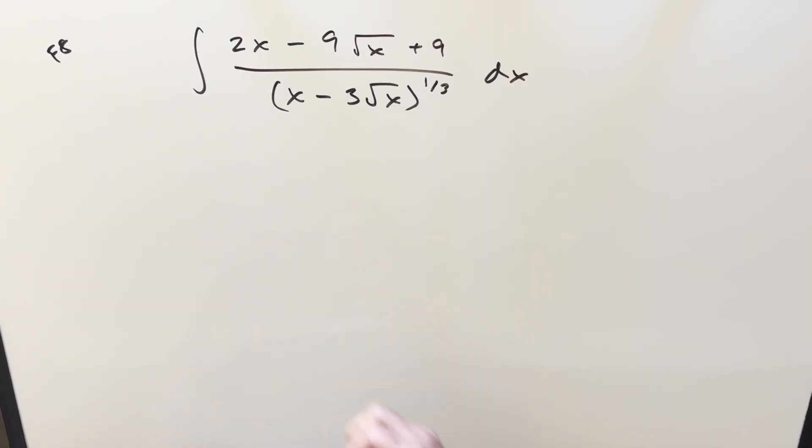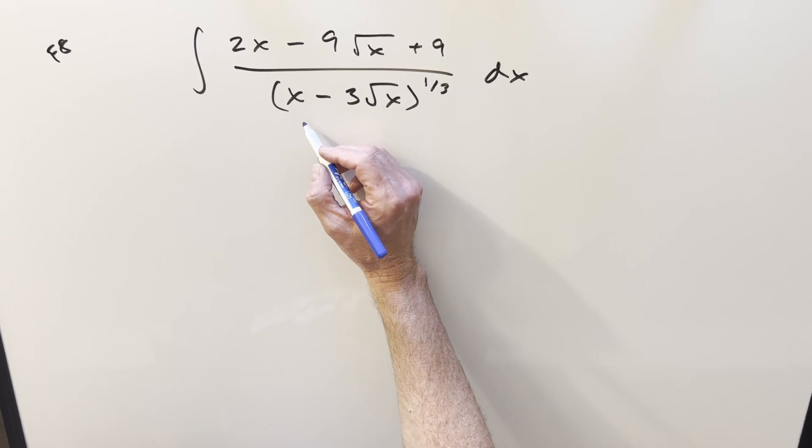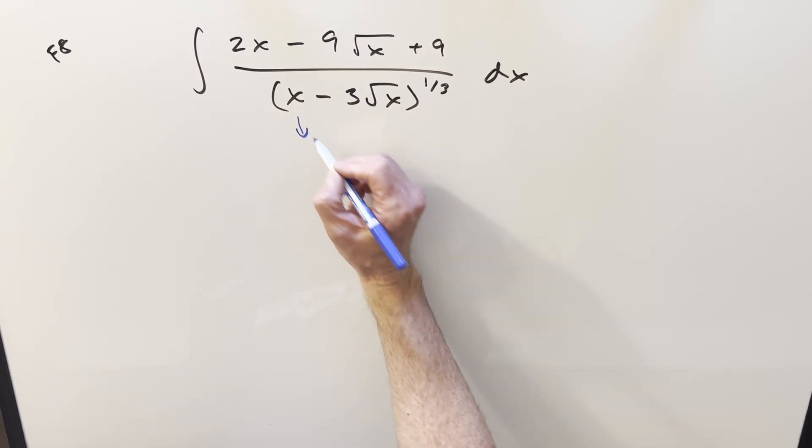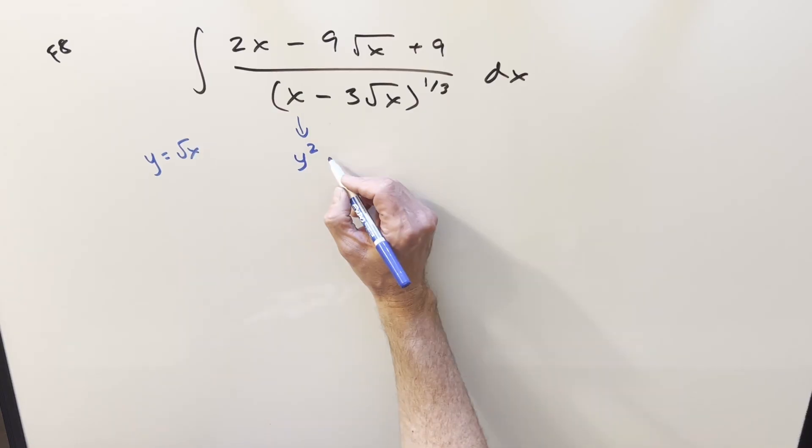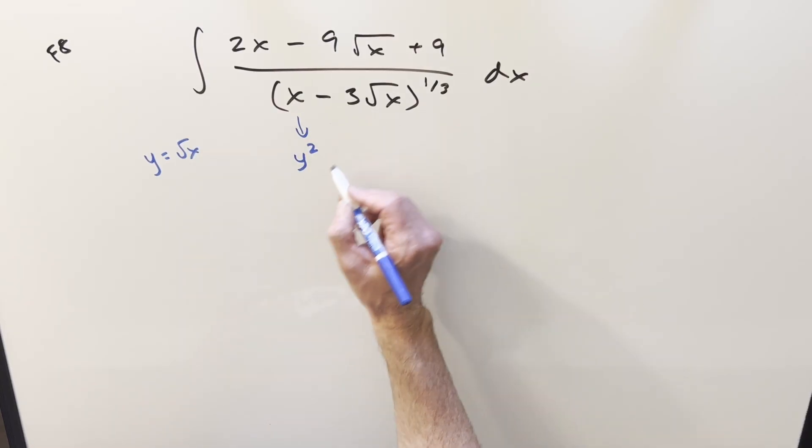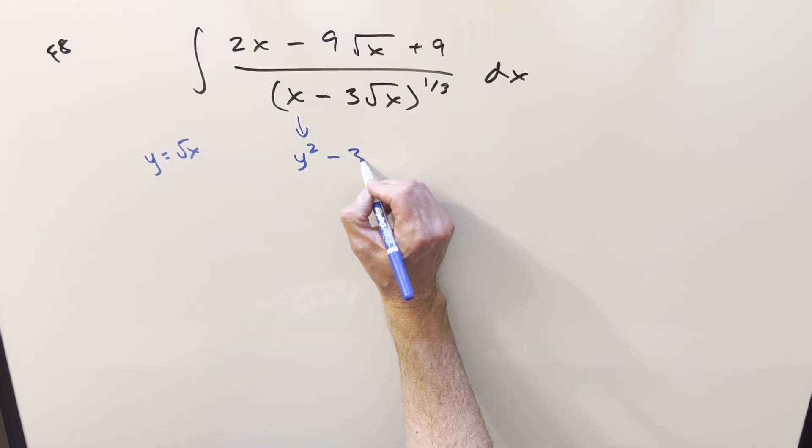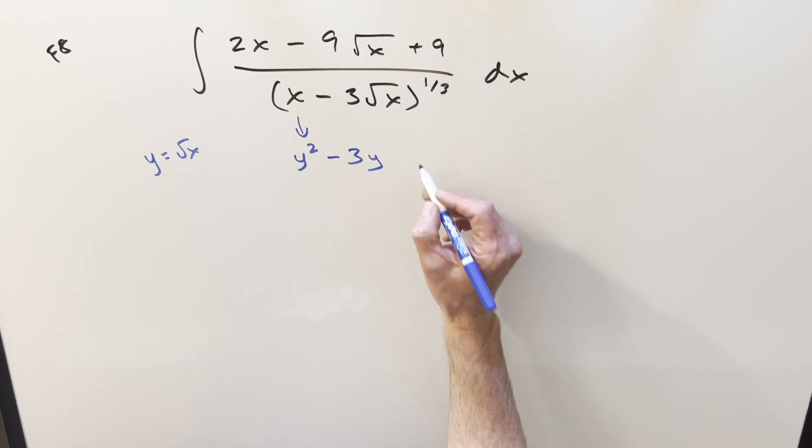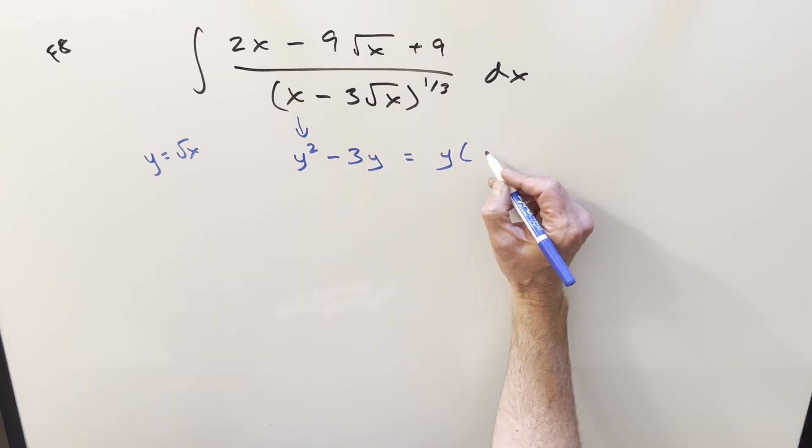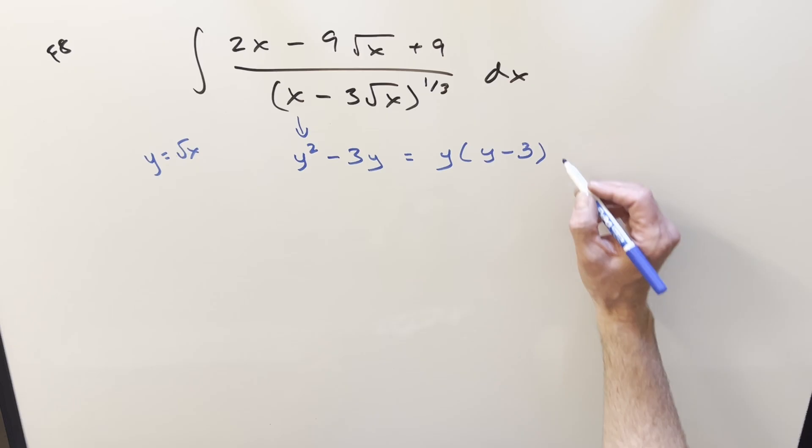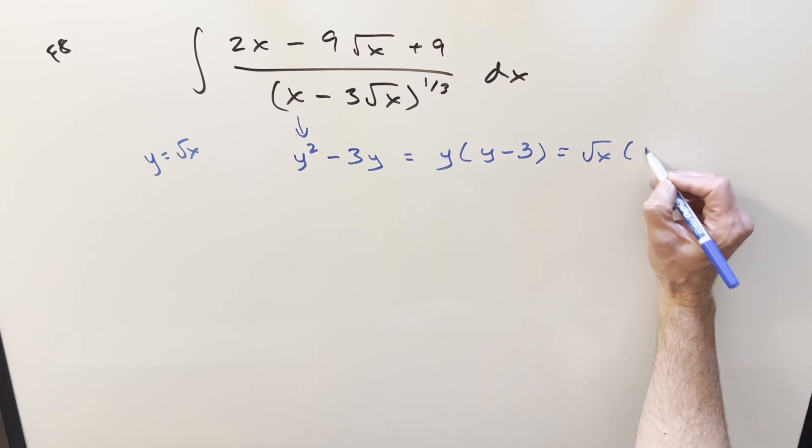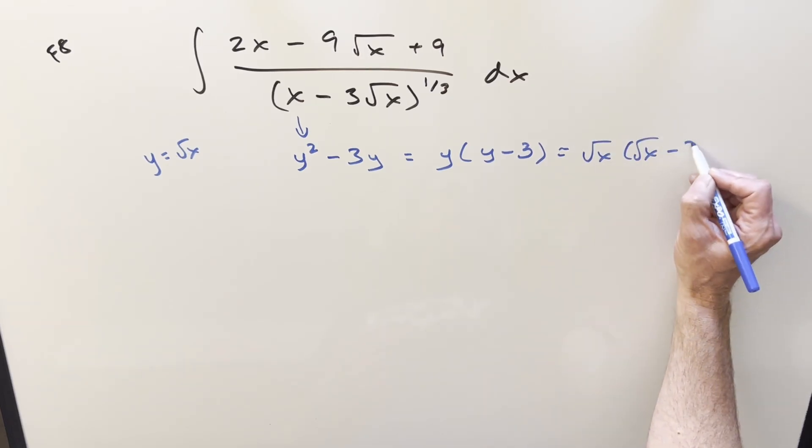Oftentimes when you see x and square root of x in the same integral, factoring is probably a good way, and you might want to look at it in terms of a quadratic. So you can do a little algebra substitution, just totally optional if it helps you. I can call y equal to square root of x. And then when I factor the denominator, we're looking at y squared minus 3y. So that's going to be the same thing as y times y minus 3, and then we can write that as square root of x times square root of x minus 3.